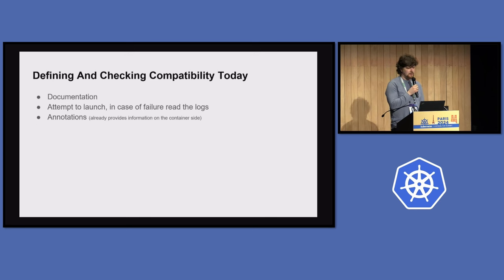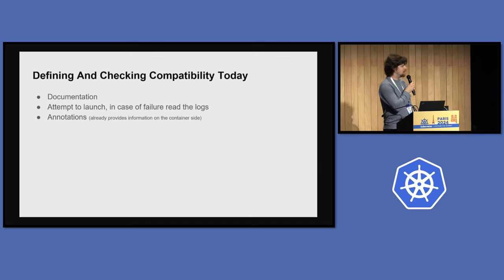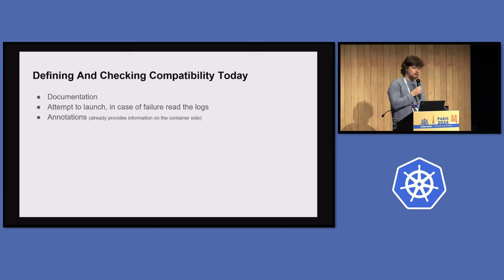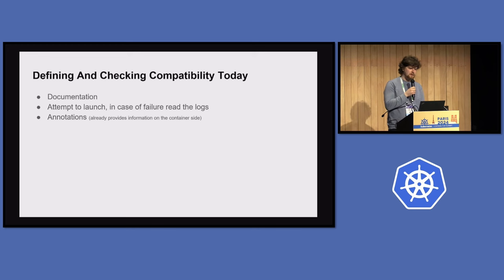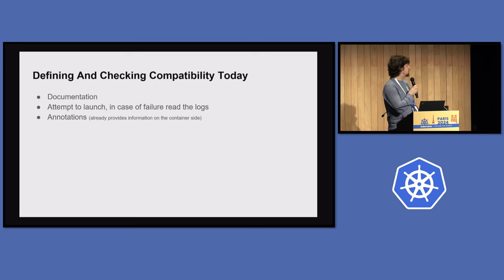How are people doing this today? Vendors provide documentation on how to run containers, but it's done in so many different ways that it's impossible to automate the checks. Another approach is to just launch containers on the cluster and read the logs on failure to figure out whether to reconfigure the node or go elsewhere — I see this second approach very often. If there's missing kernel configuration, features, modules, or hardware, people just try and see. With hardware it's a bit different in Kubernetes because there are ways to expose that.